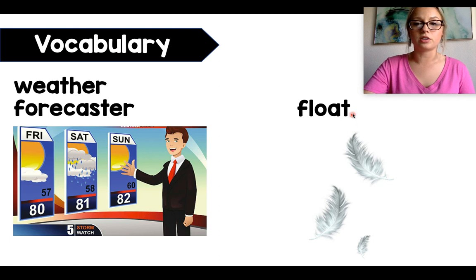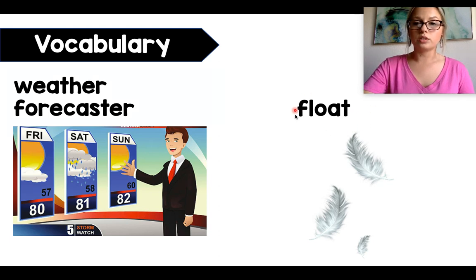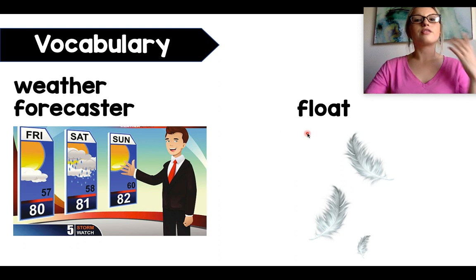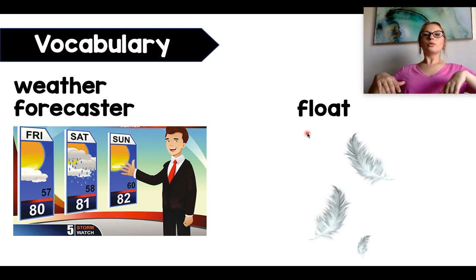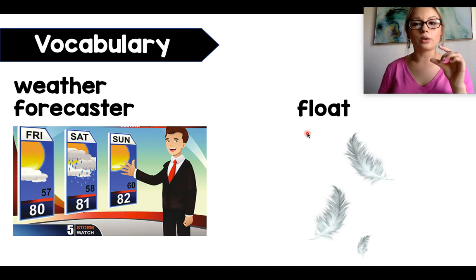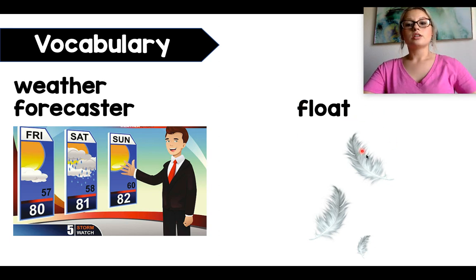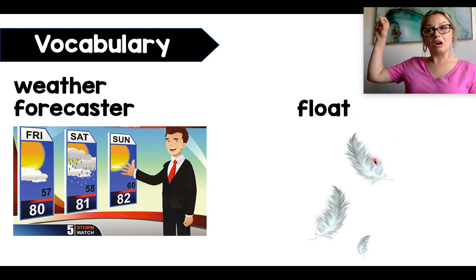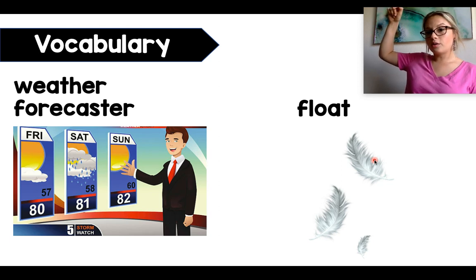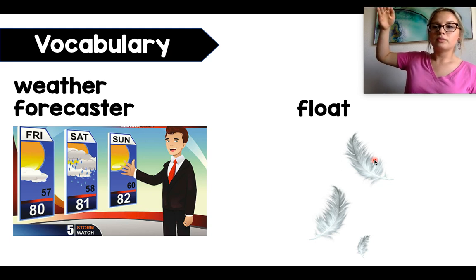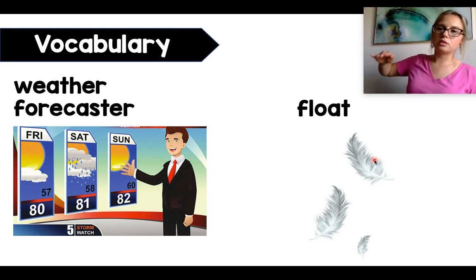The next word we're going to see in our story is the word float. Sometimes when I think of float, I think of something floating on water — like floating in a pool or an ice cube floating on water. But in the story, they're talking about something that floats down. If I had a feather and I dropped it, the feather wouldn't just fall straight to the ground really fast — it would kind of float down.